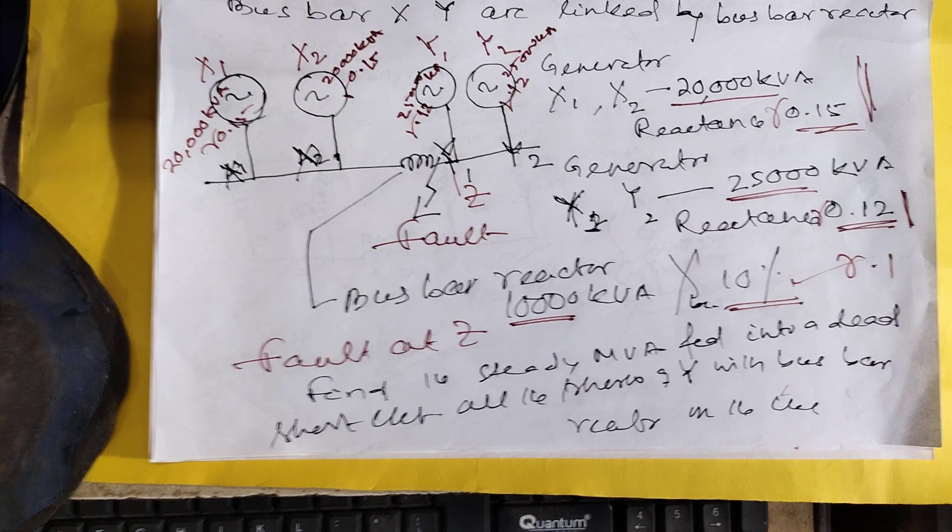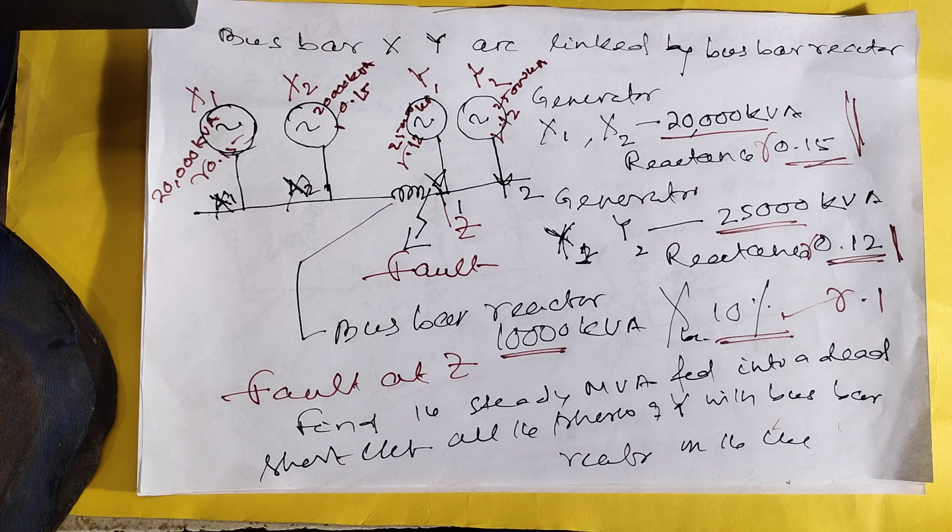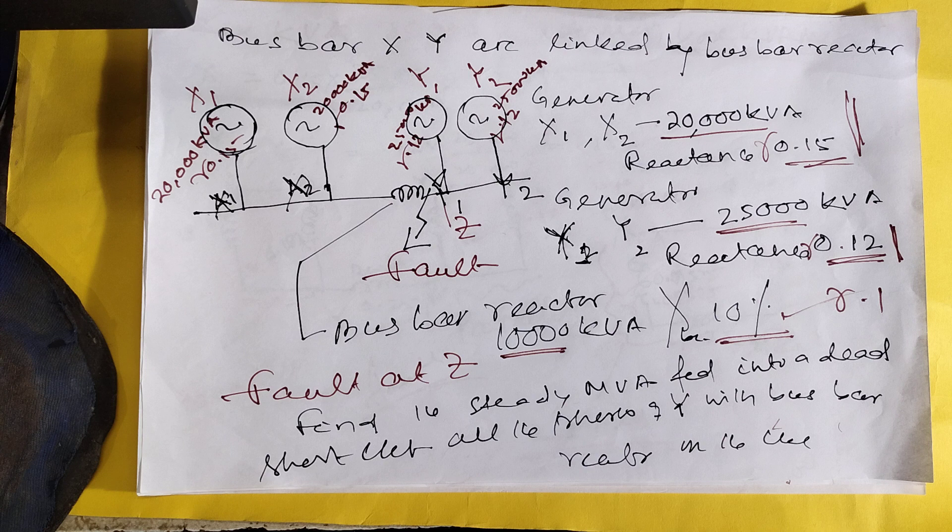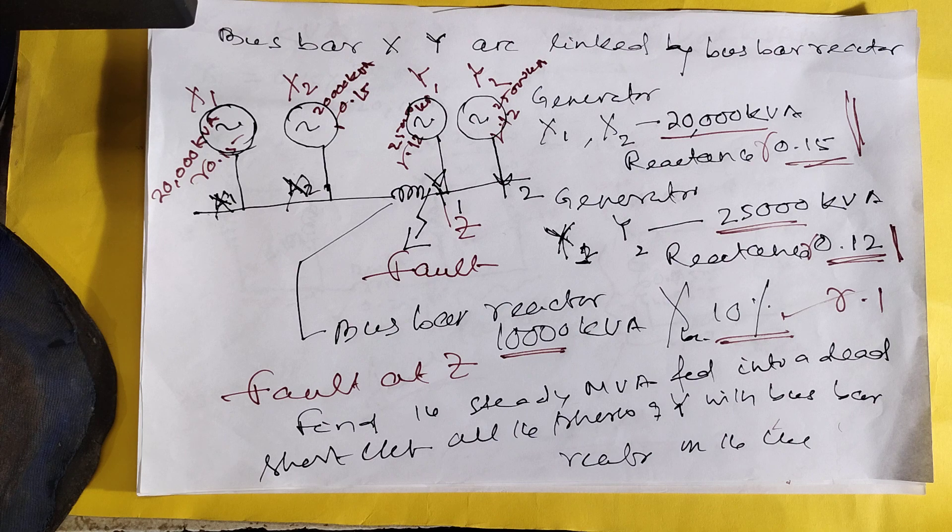Here one problem is there. There are two networks, two generators each in both X and Y. Each generator in X is 20,000 KVA and the reactance is 0.15. The Y generator is 25,000 KVA with 0.12 reactance. There is a bus bar reactor of 10,000 KVA and 0.1 reactance. Here you have to calculate the fault because there is a fault near the Y-axis.